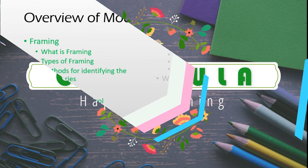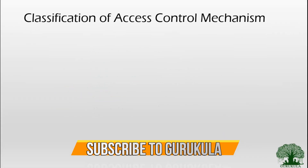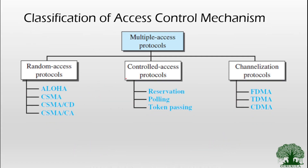In our previous videos we were talking about the access control mechanisms incorporated in the data link layer. This video is all about the controlled access protocol. In our previous videos we completely discussed the various random access protocols such as Aloha, CSMA/CA, CSMA/CD, and different approaches for CSMA. In this video we will be covering a special type of access control mechanism called controlled access protocols. In controlled access protocol we have three variants of access control.